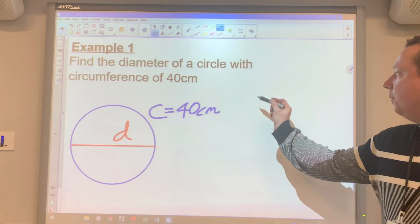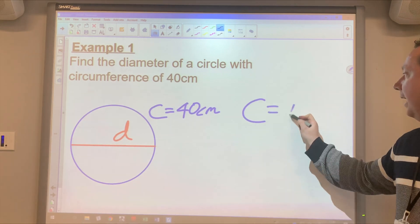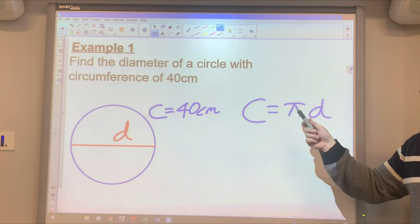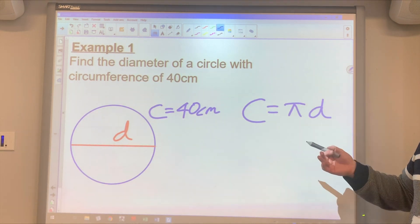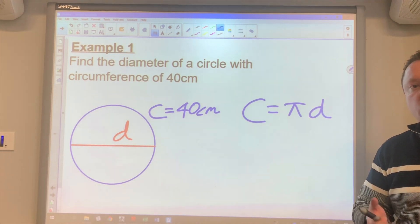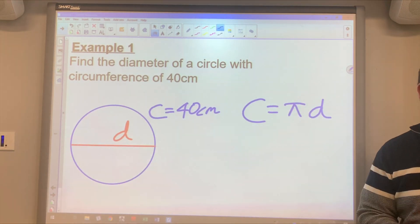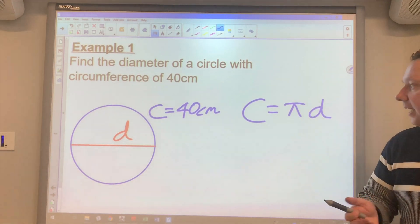And we'll always start by writing the formula. So the formula we've got, remember, is C equals pi D. Now we could remember that D is C divided by pi, if we wanted to. But there's no point remembering a bunch of formulas when we don't have to remember one formula and then rearrange that to whatever we need at the time.